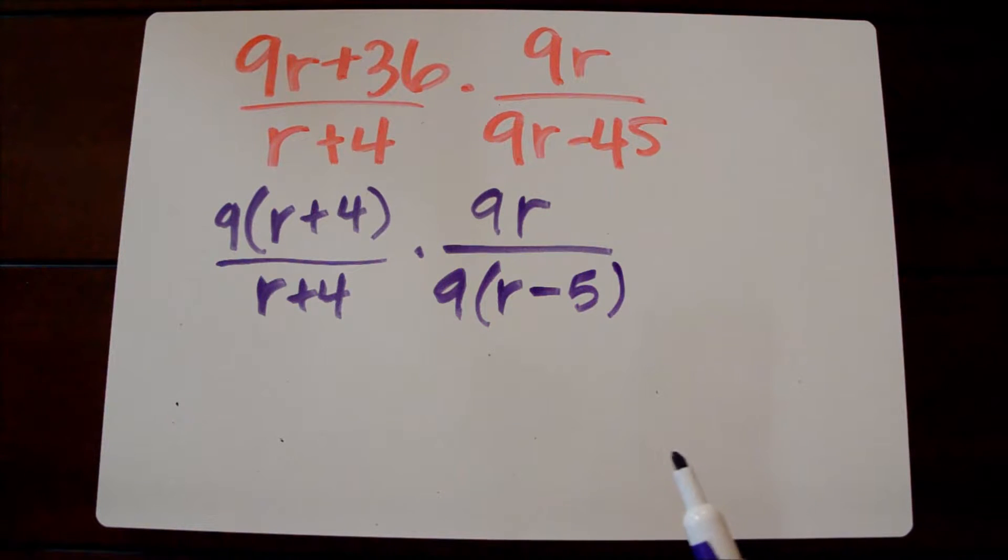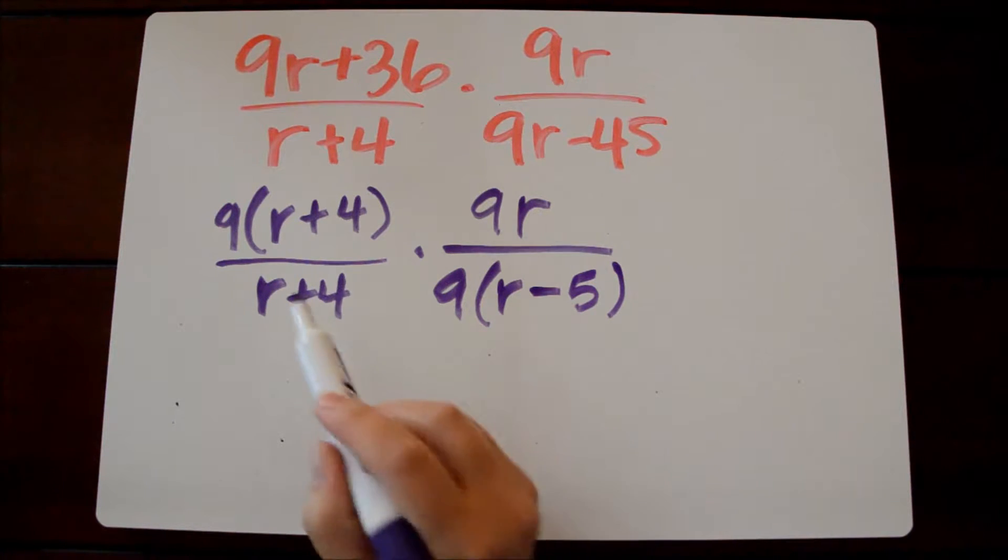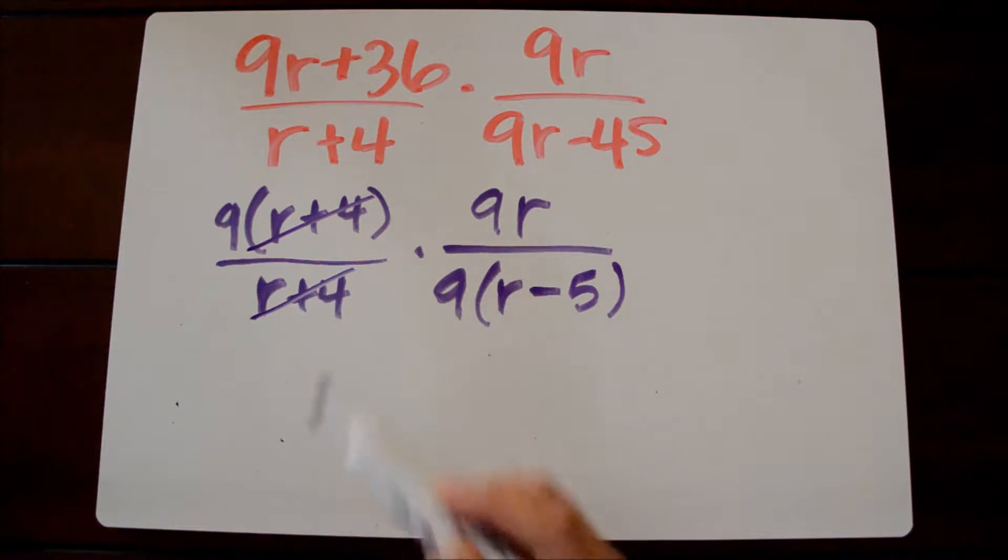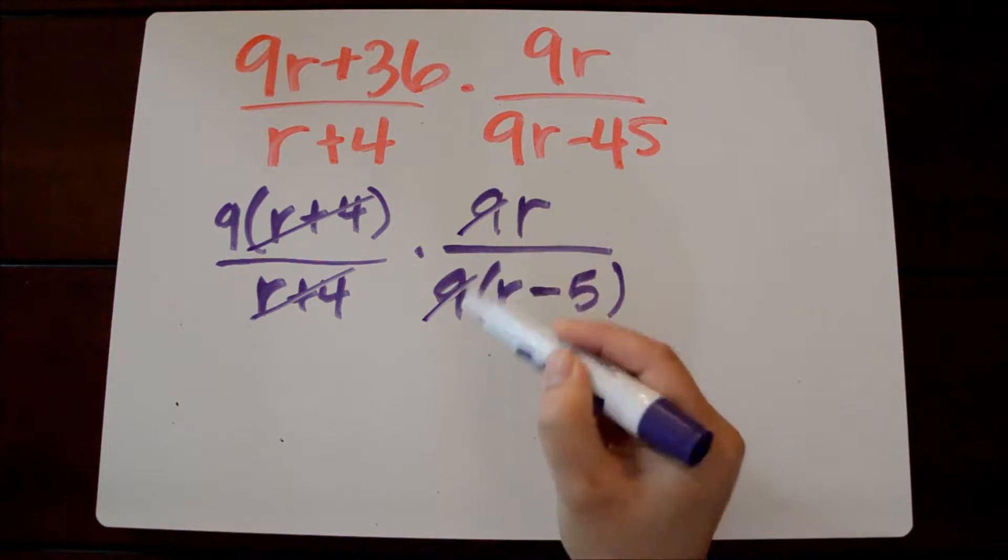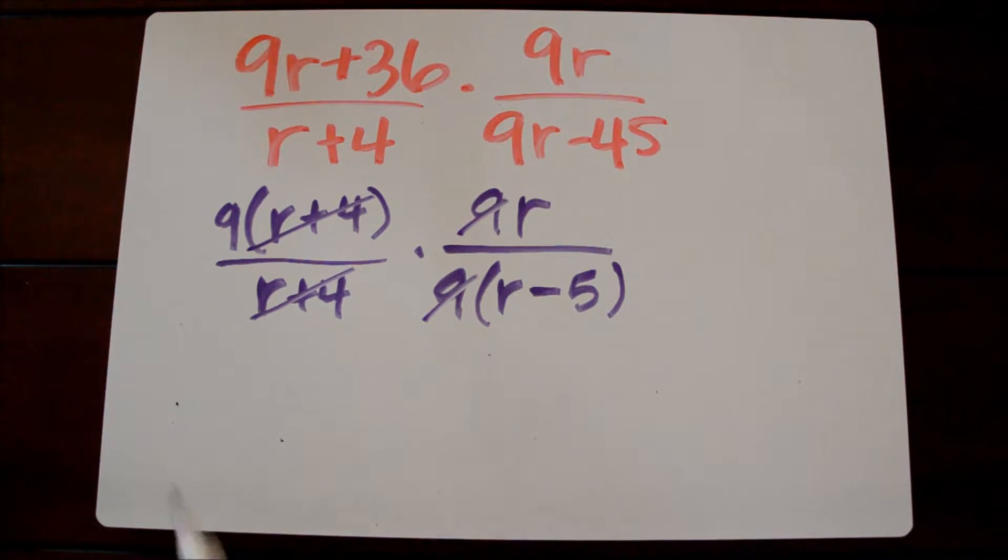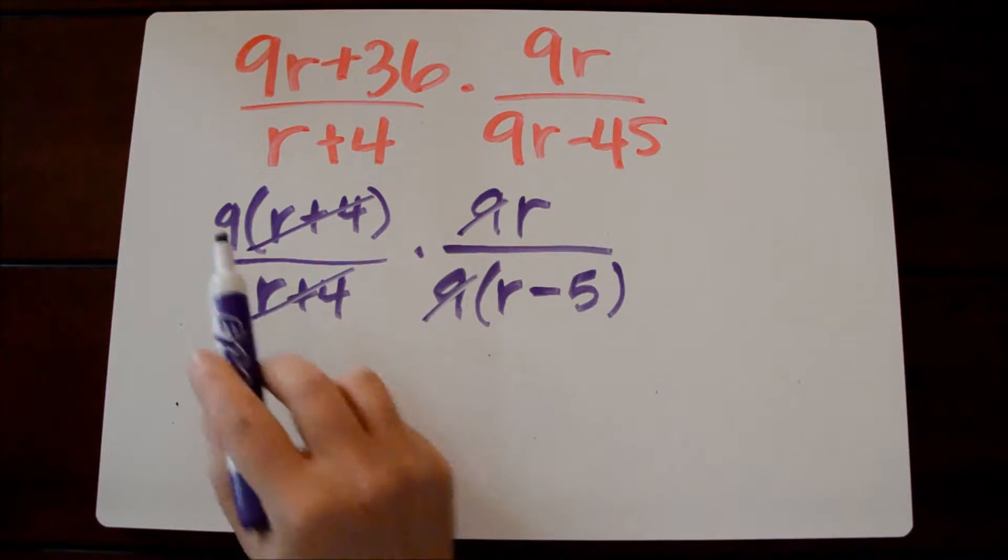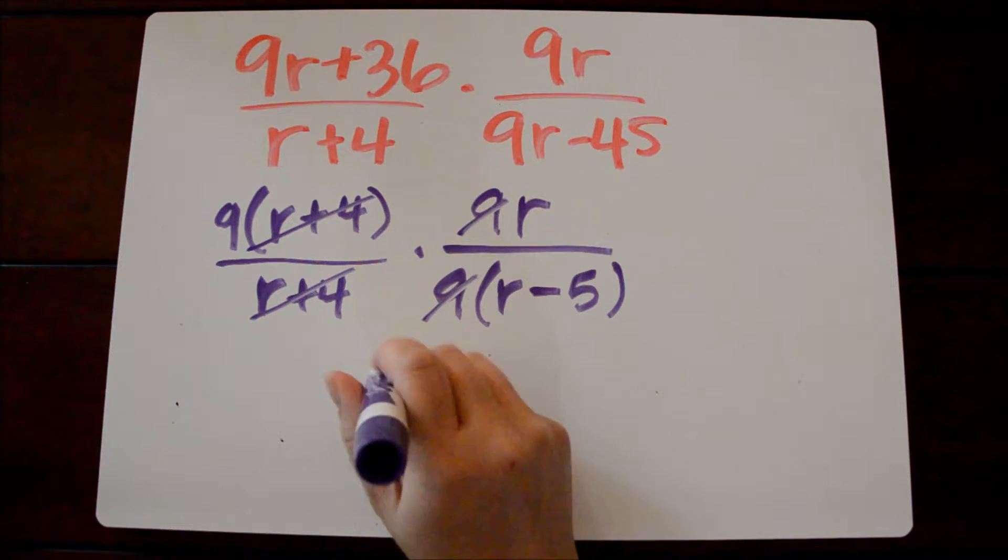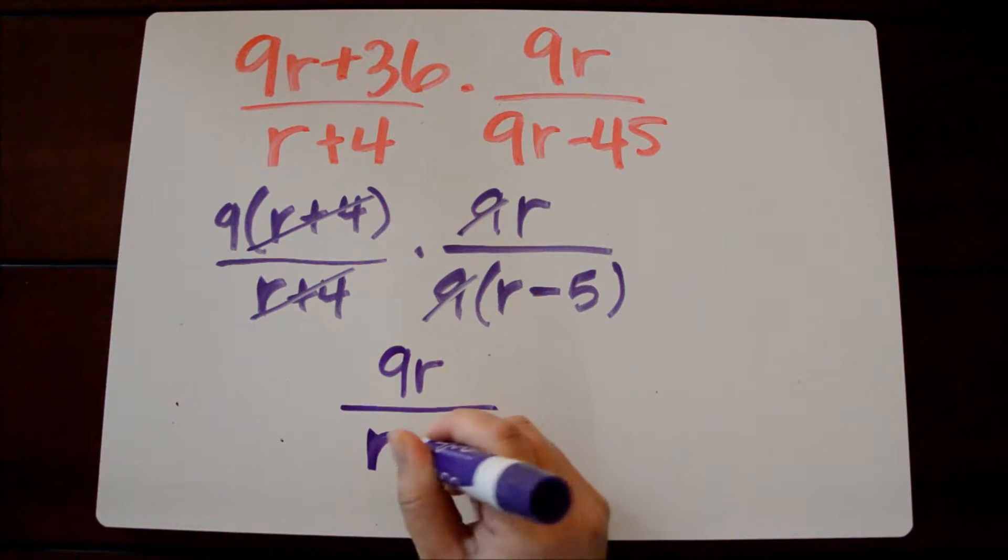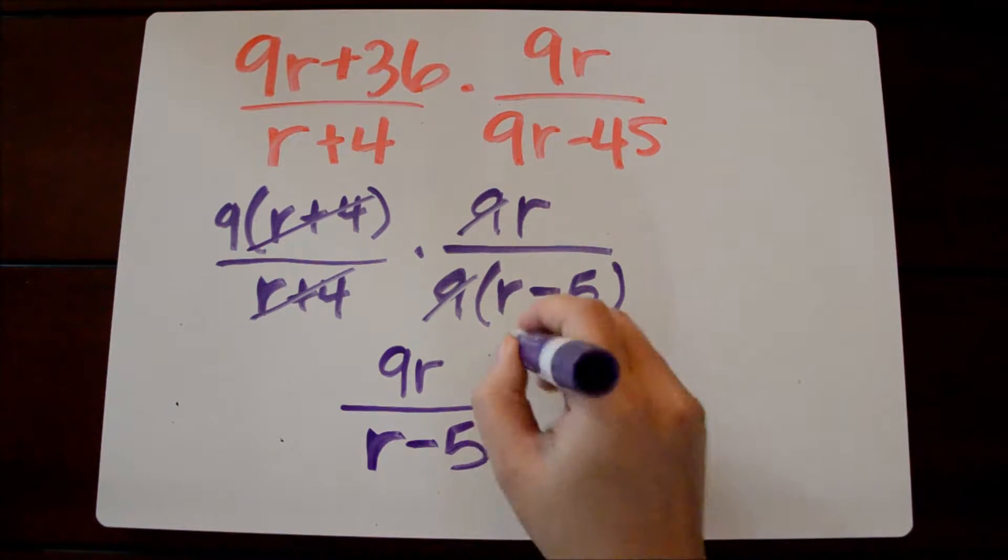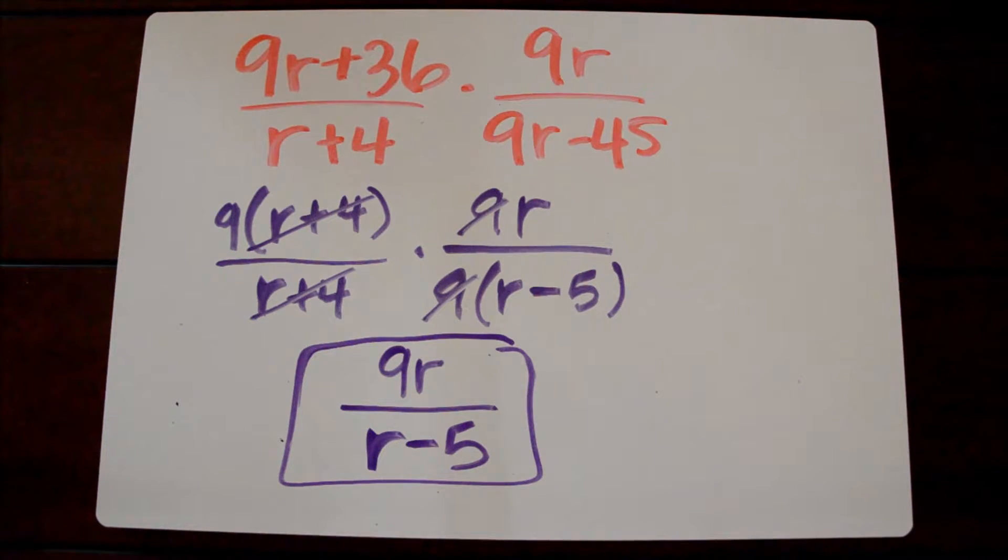So anything divided by itself will equal 1, so r plus 4 over r plus 4 we could go ahead and cross those out because it just equals 1. 9 divided by 9 equals 1 so we could cross those out as well. And then when we multiply it's just like a fraction, we multiply straight across. So 9 times r is 9r and then we're left with r minus 5 in the denominator. And that is our simplified expression.